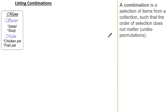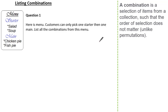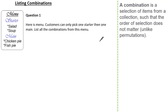Let's look at a question and see if we can determine why it is important to list combinations. The question states: here is a menu. Customers can only pick one starter and then one main. We are asked to list all the combinations from this menu. Why don't you give it a go and press pause if you need.